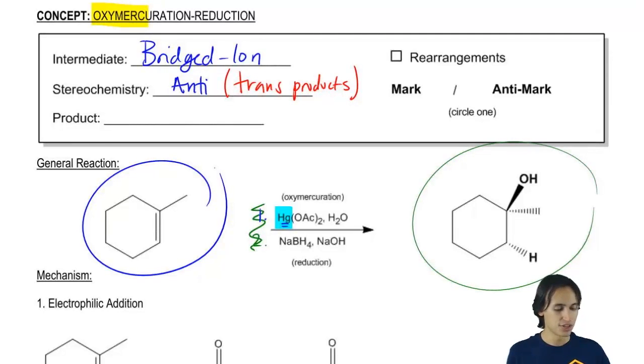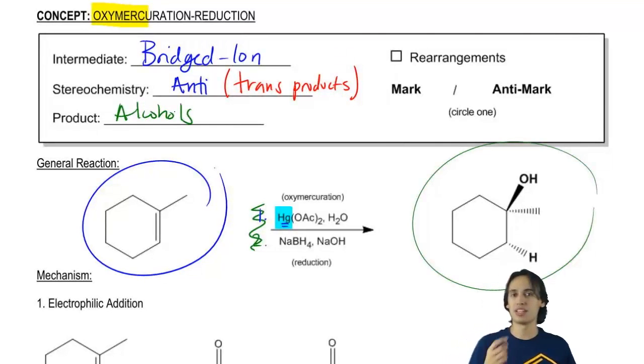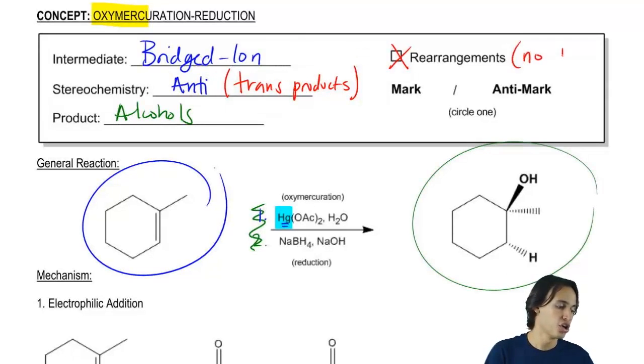And like I just told you guys, the products are alcohols. So now let's come to the last two facts. Would we expect there to be rearrangements in this mechanism? Remember that rearrangements happen when we have carbocations. Do we have a carbocation? No. So it turns out that this reaction is actually not going to have any rearrangements because it doesn't have any carbocation. So I'm just going to write that right here. No carbocation. So there's actually no way for it to rearrange at all.